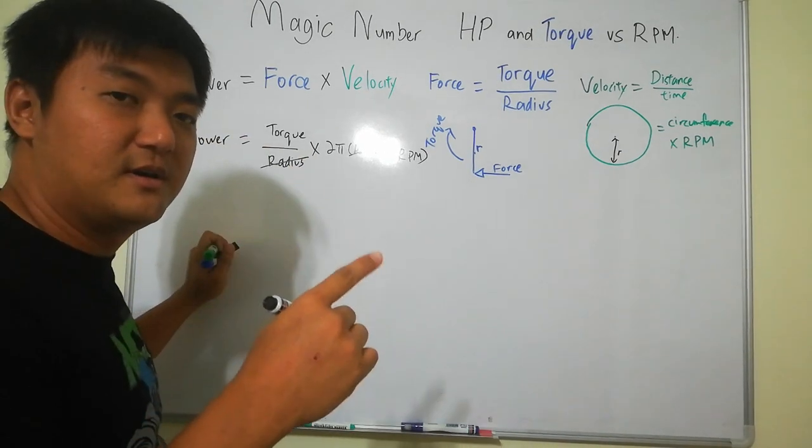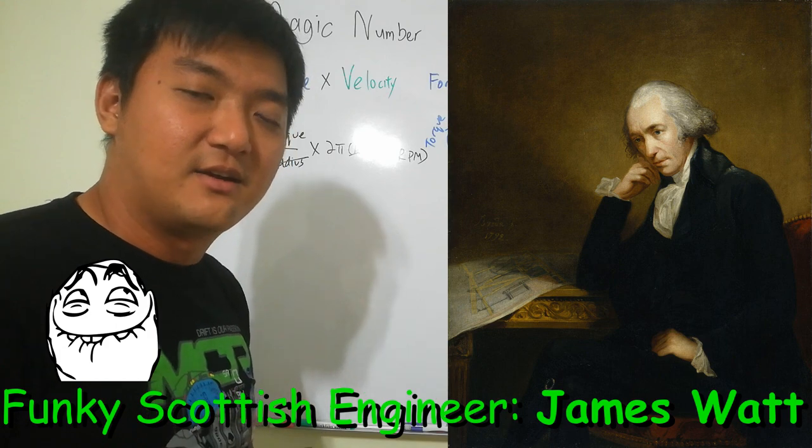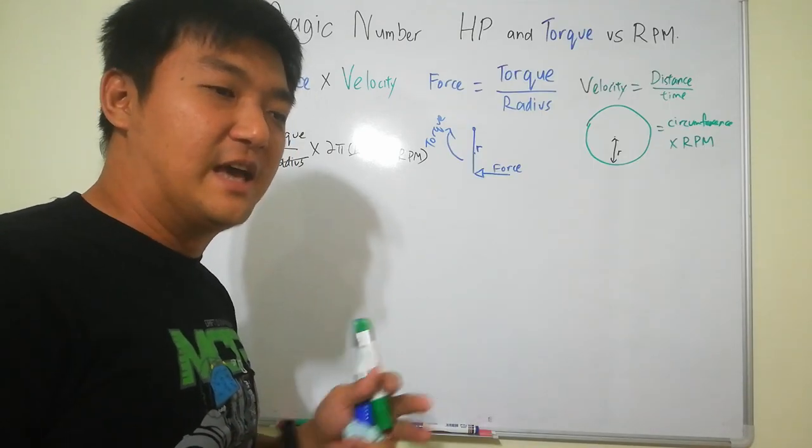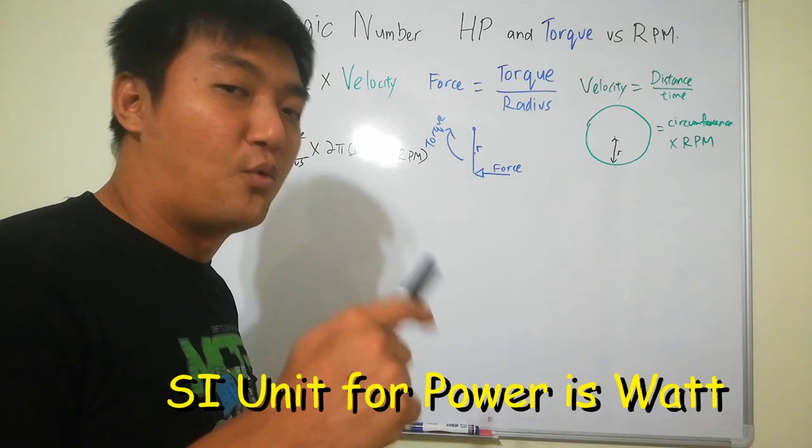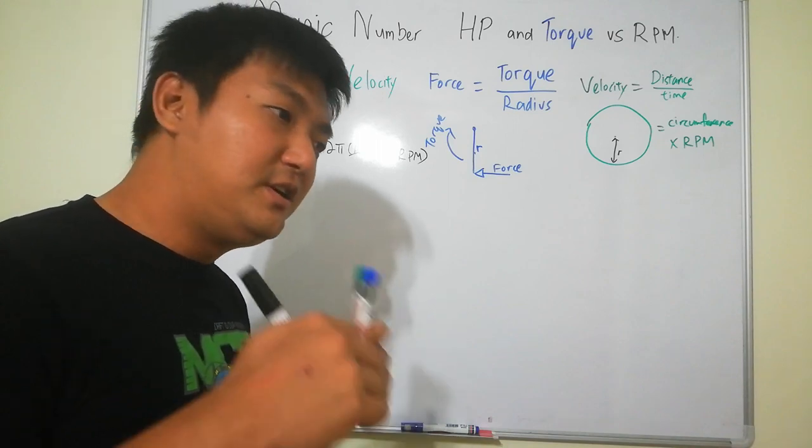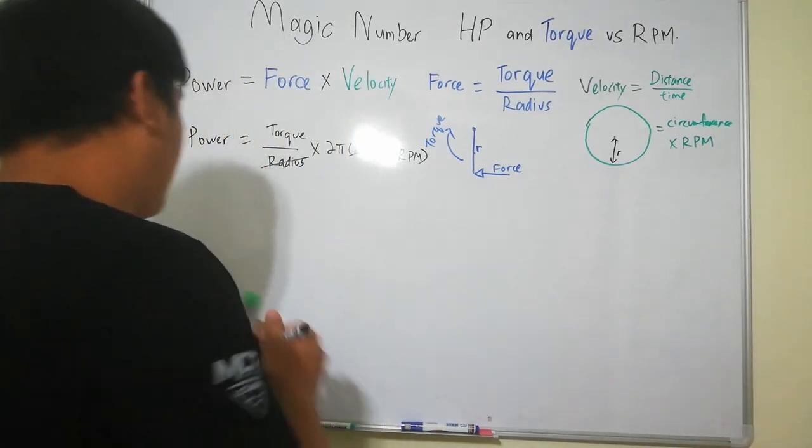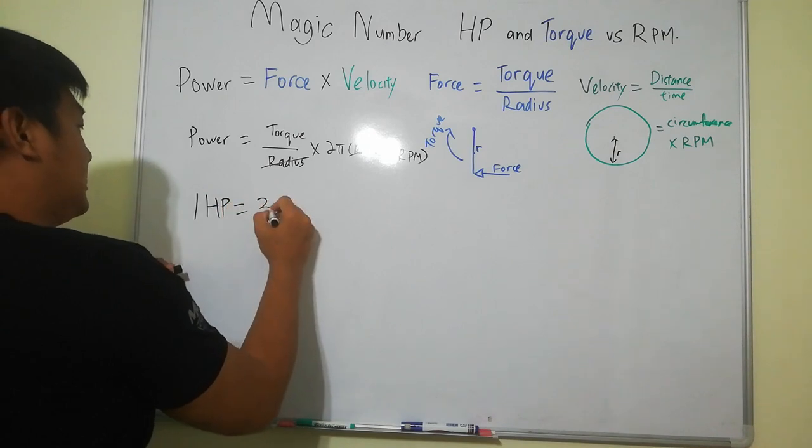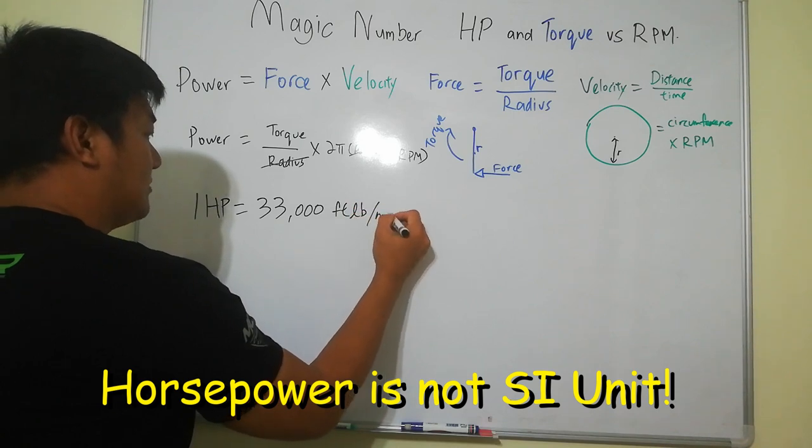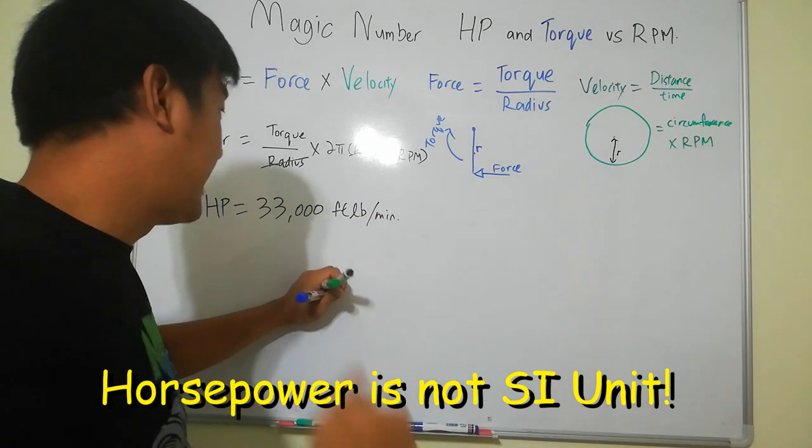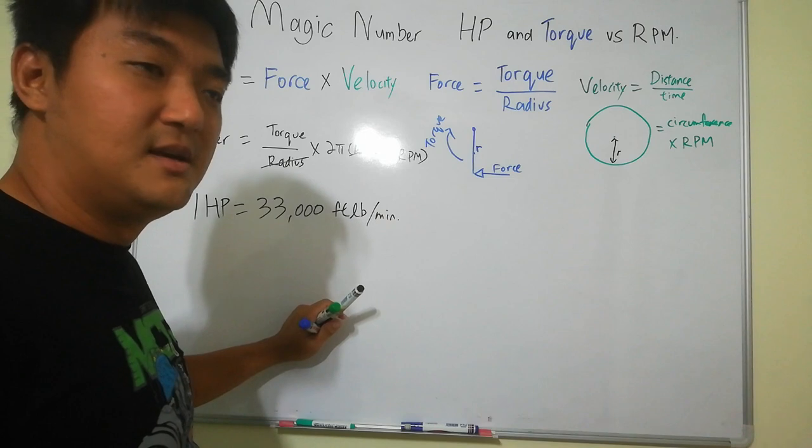So one horsepower is one Scottish engineer who is very funky his name is called James Watt. He's the guy who derives the SI unit for power in watts. That's why it's called kilowatts, megawatts. But this guy is very funky because he tried to say that how much power can a horse drive. So a horsepower equals to 33,000 foot pound a minute. He is saying that one horse can move 33,000 foot pound in one minute.